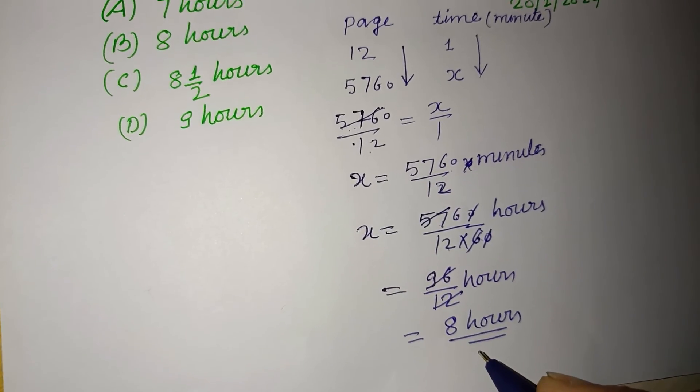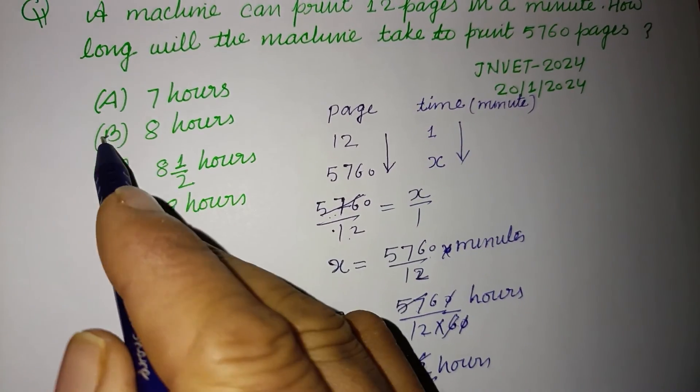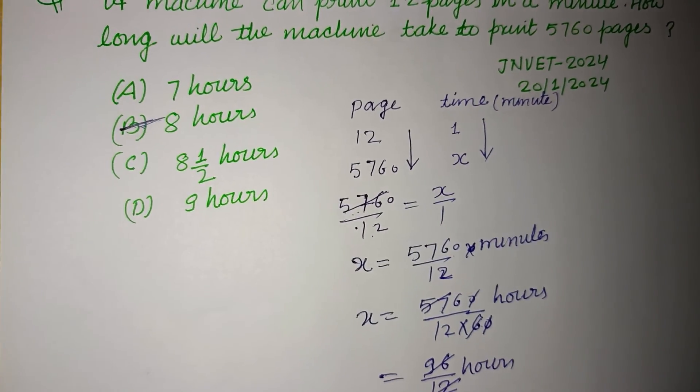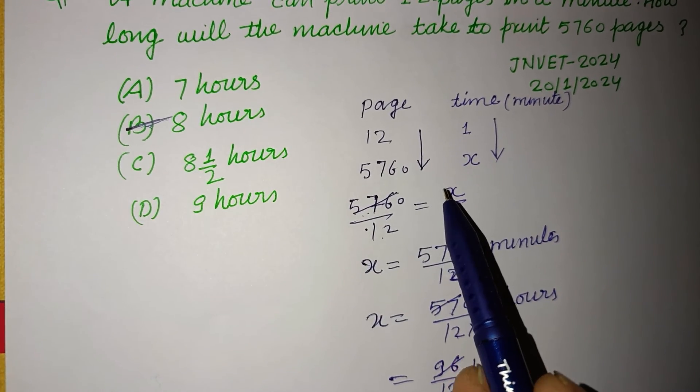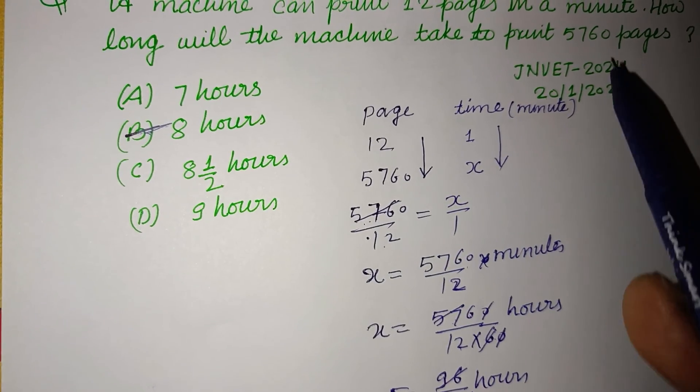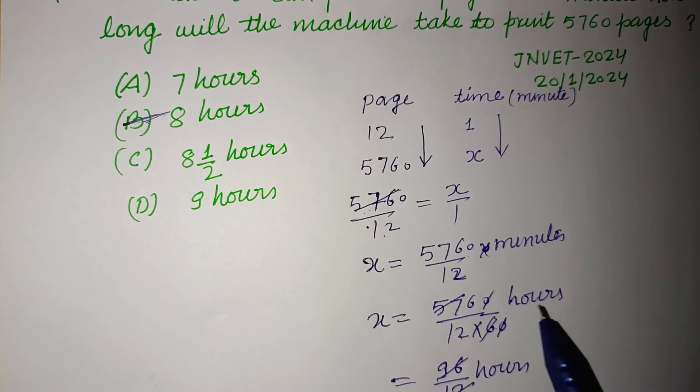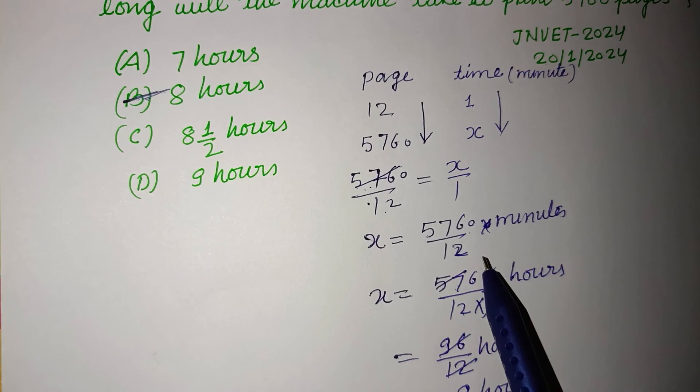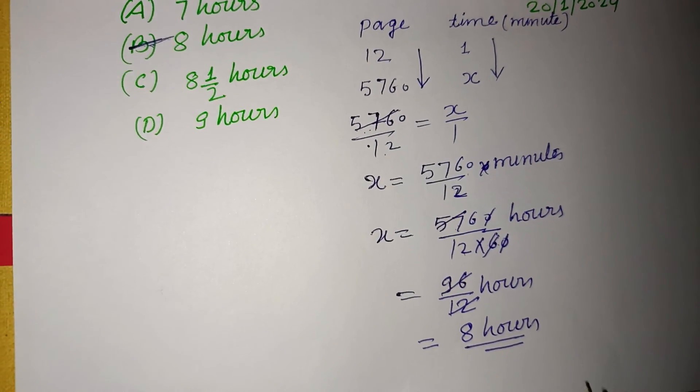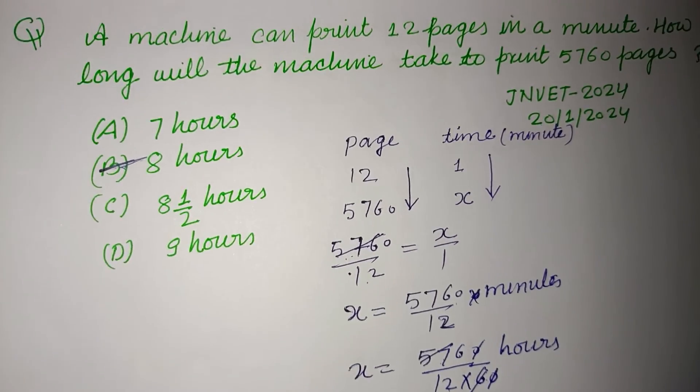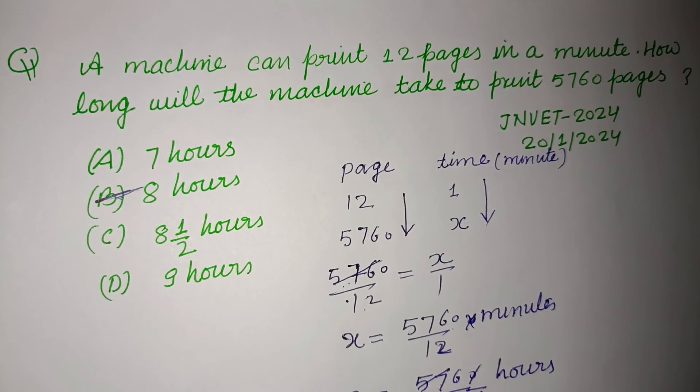8 hour is the correct answer of this question. This is found in option B. So, student, first we get x at the time to print 5760 pages. And after dividing this by 60, we got the required time in hour. I hope you got it. Please like the video. Subscribe channel. Thanks for watching.